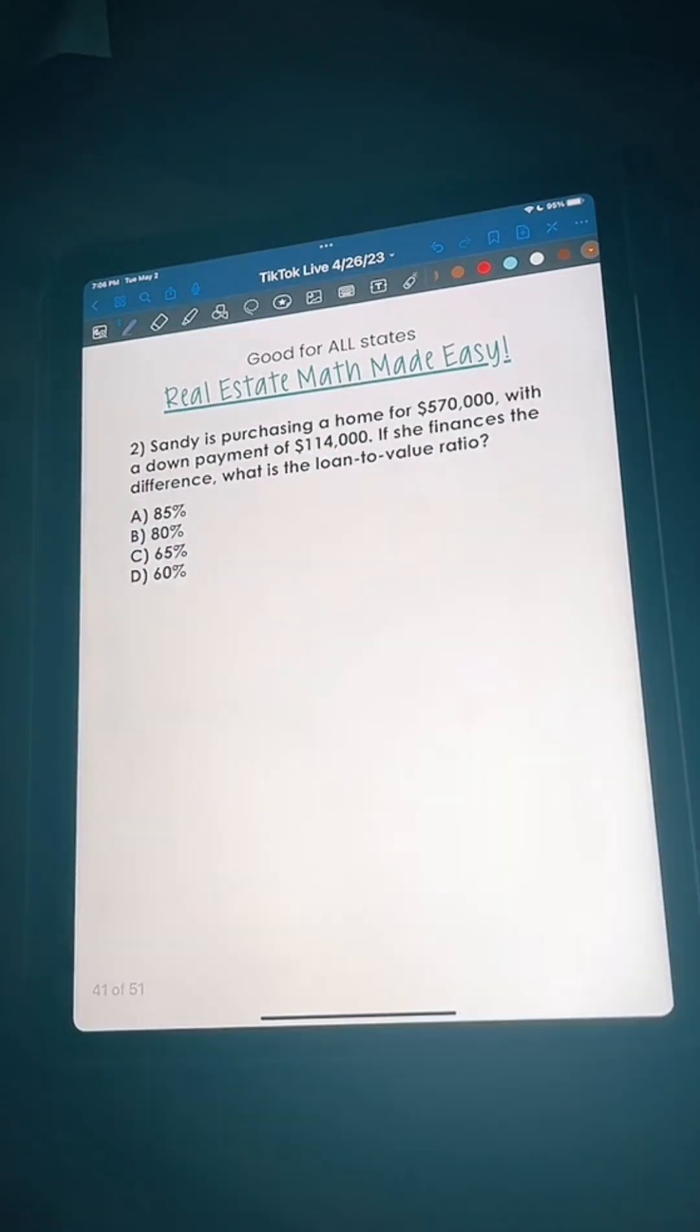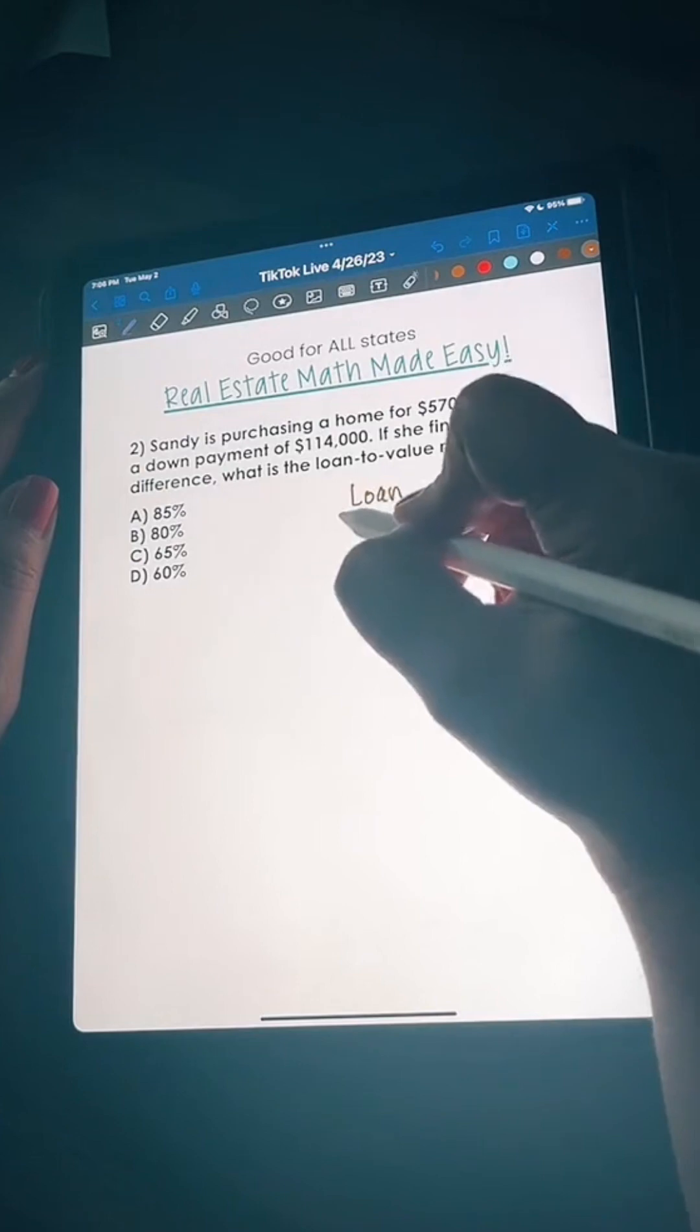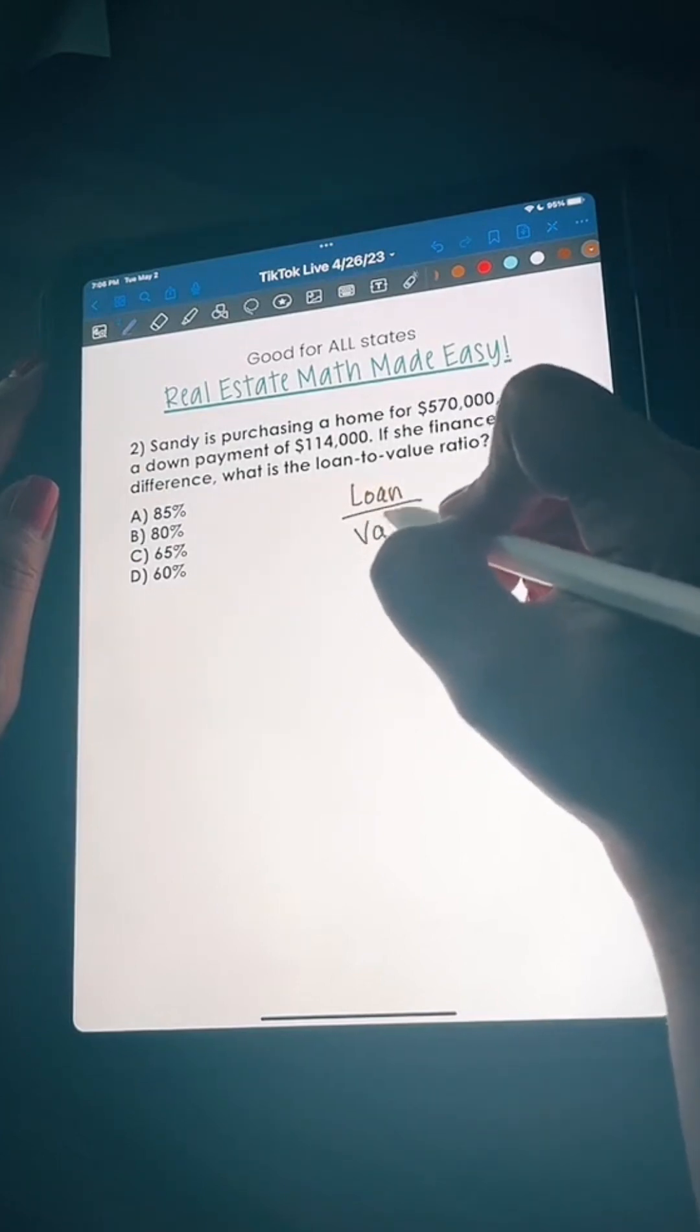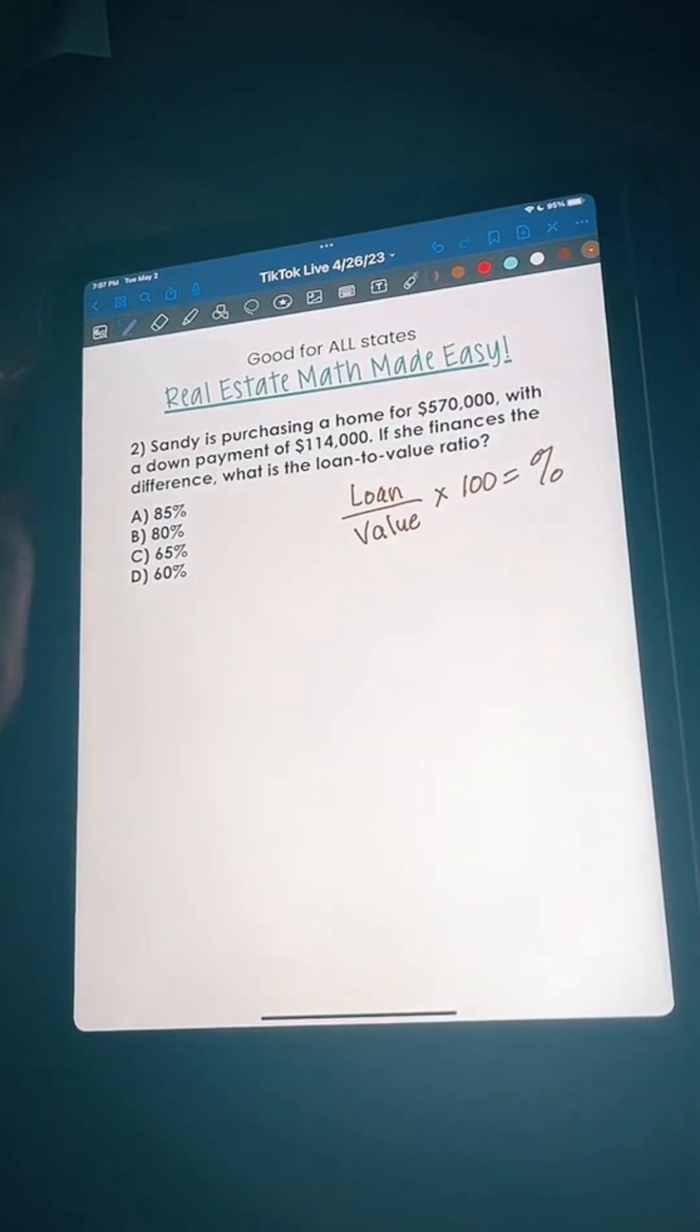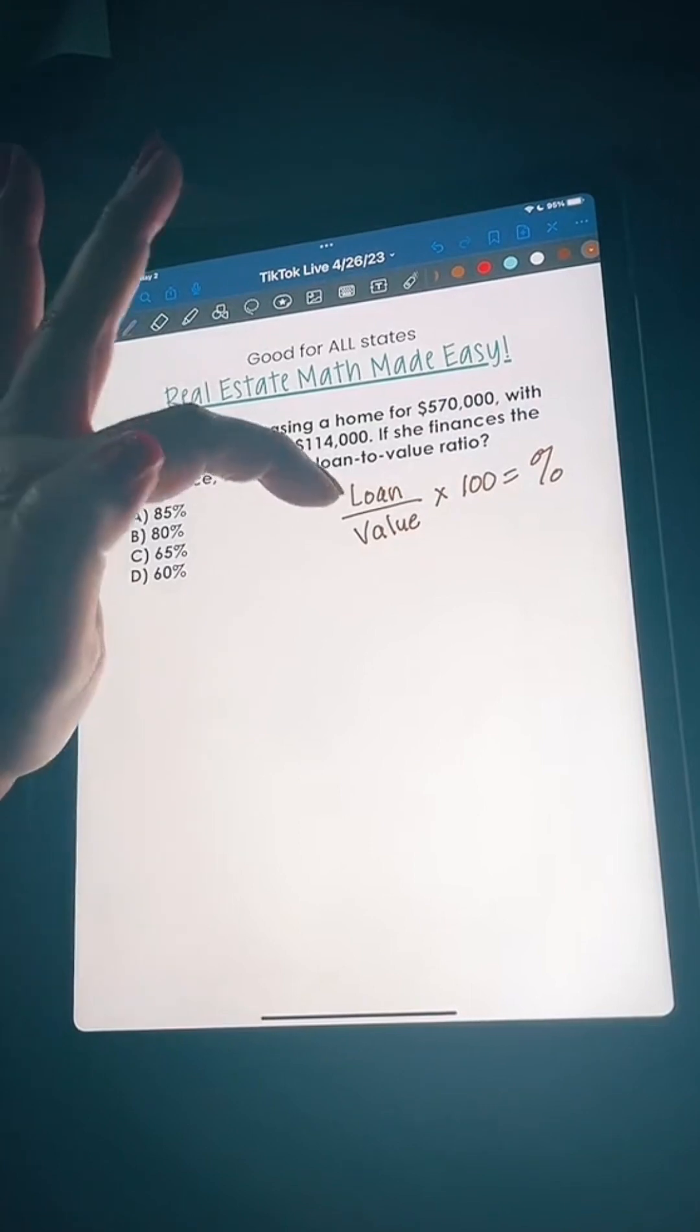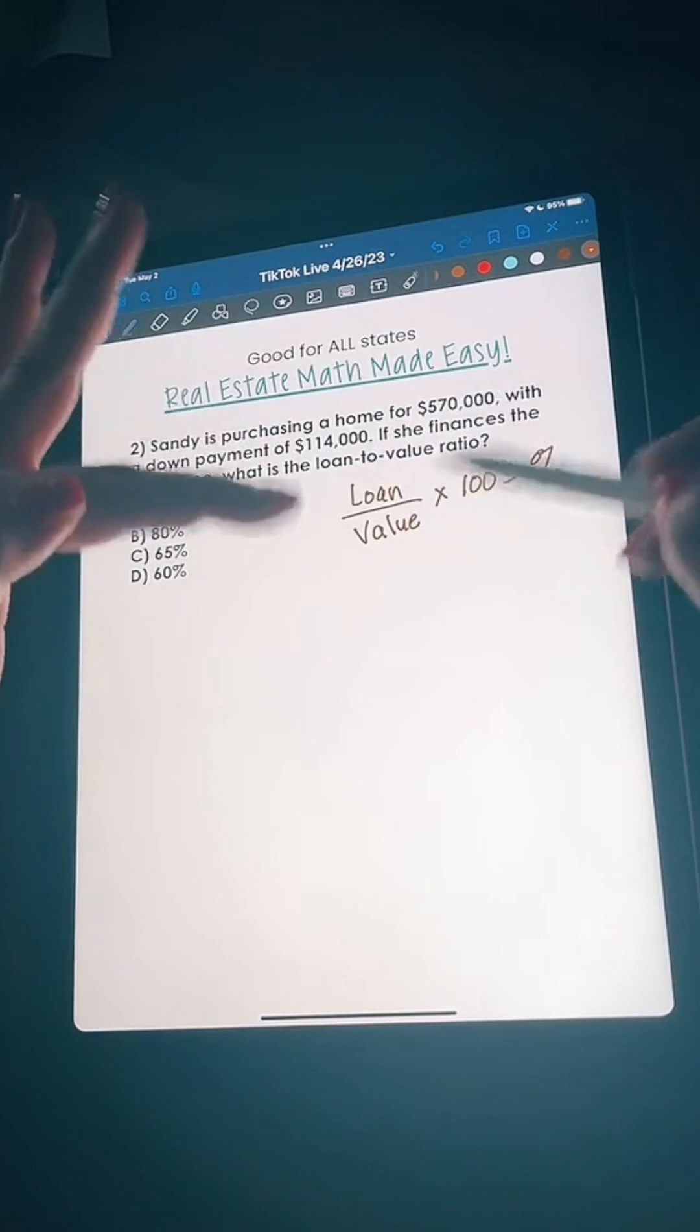Let's move on. Sandy is purchasing a home for 570,000 with a down payment of 114,000. If she finances the difference, what is the loan to value ratio? Remember what I told you, loan to value is a fraction. Times this by a hundred is going to equal your percent. The value we know is 570,000.